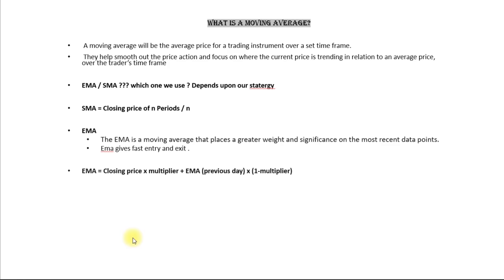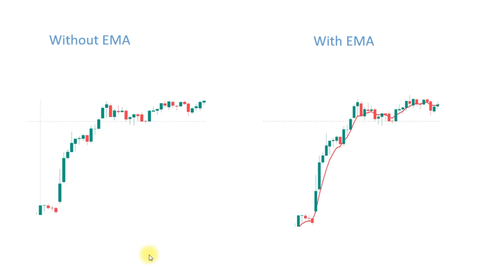Whether to use EMA or SMA depends completely on the strategy. SMA is the closing price of N periods divided by N. EMA has its own formula, and we use EMA because it gives faster entry and exit for a particular trade.